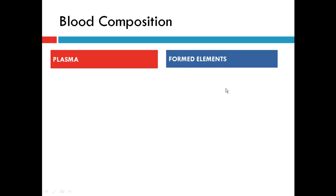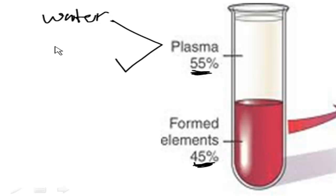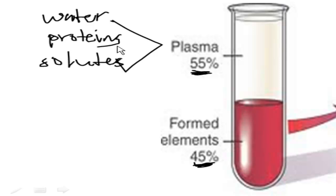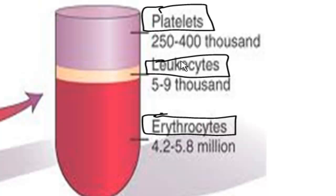Now let's move on to blood composition. Plasma, the liquid portion of blood, makes up over half, and the formed elements — the blood solids — make up just under half. Looking at the test tube on the right, plasma is at 55% and the solids at 45%. Breaking down plasma: since it's liquid it's made of water, but also includes proteins and solutes like sodium and potassium. Of the formed elements, the majority are red blood cells called erythrocytes, making up almost all of that 45%. Then we have thrombocytes — the platelets — and finally the smallest chunk, the white blood cells or leukocytes.